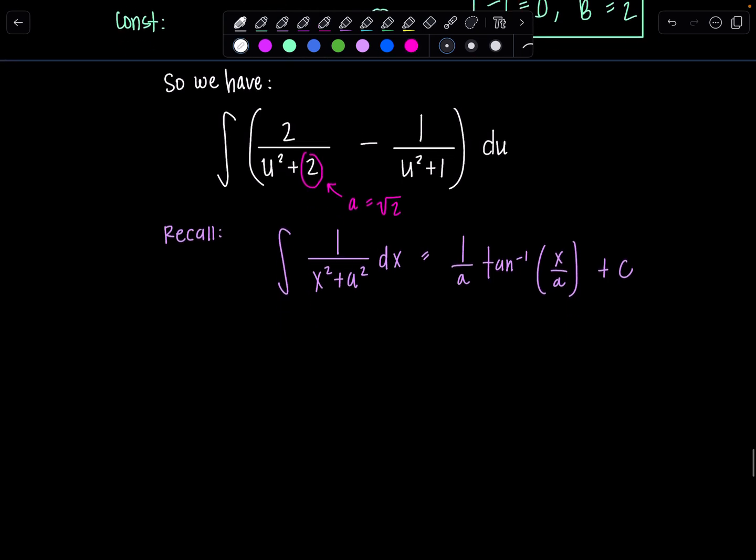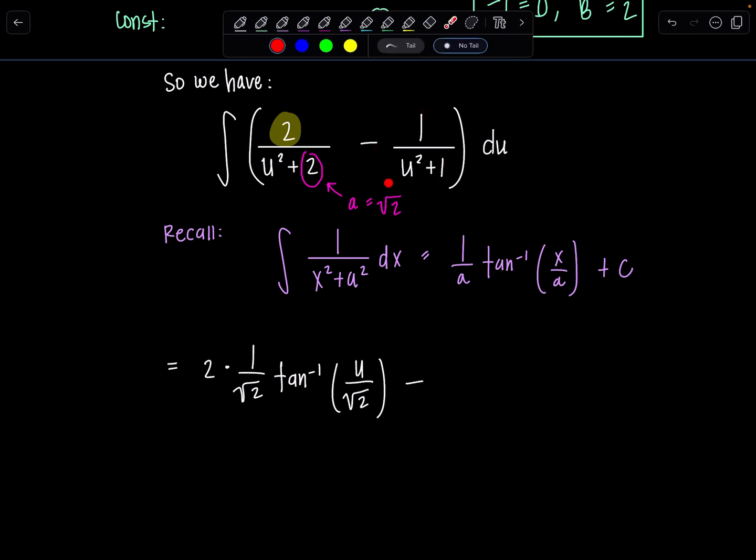Okay, perfect. So then we can just proceed. And then what about this two in the numerator? Well, it just comes along for the ride. So two stays there, I'm going to have one over radical two out front, then we have tan inverse of u over radical two, minus, and then now this second one is just straightforward, that's just going to be tan inverse of u plus c for the whole problem.